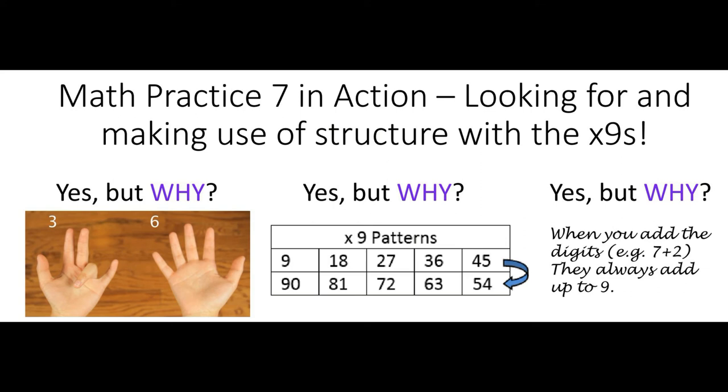it also allows us to dig into that very similar issue of why is it that half of our times nines facts are 18, 27, 36, and 45, and then the digits just reverse themselves. So now the products are 54, 63, 72, and 81. Why does that happen?